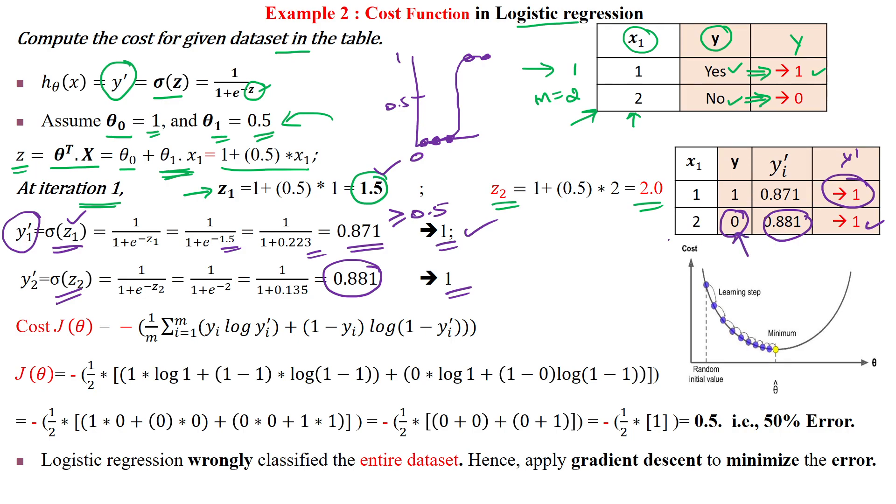This is an error. Sample 2 has an error: sample 1 is predicted perfectly, but sample 2 is not classified correctly.